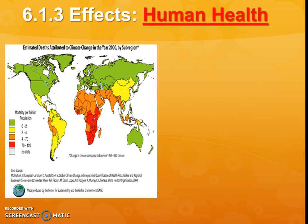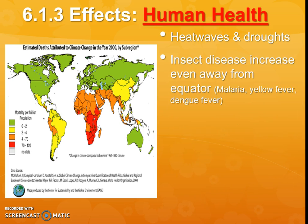Now back to humans, because of course we're very anthropocentric. We would be nervous about a lot of these things because they relate to heat waves and droughts. We've got to be really careful, and especially the young and the old will be most affected by that. We also heard about pests — that is a really big, scary thing, because insect-borne diseases like malaria, yellow fever, and dengue fever are moving away from the equator.